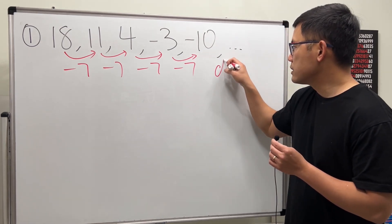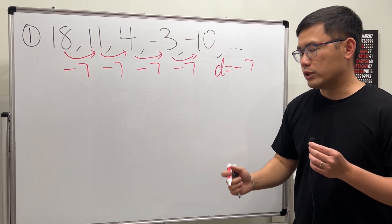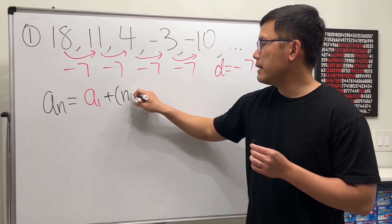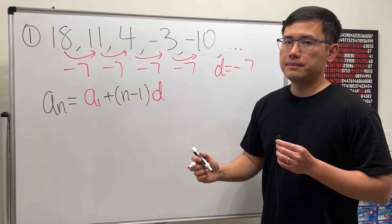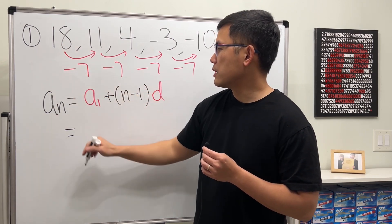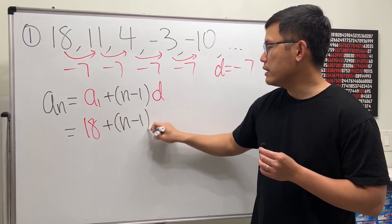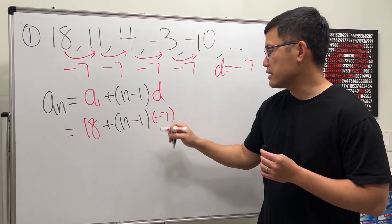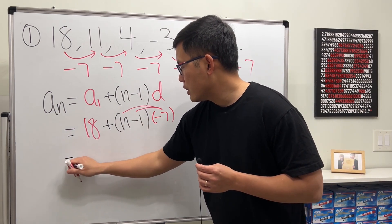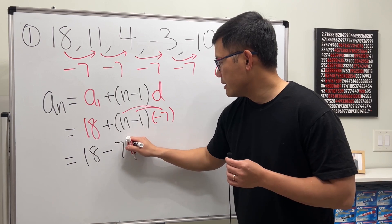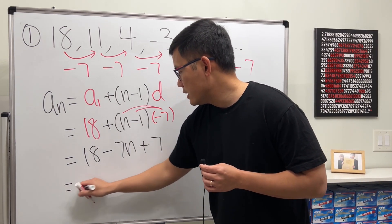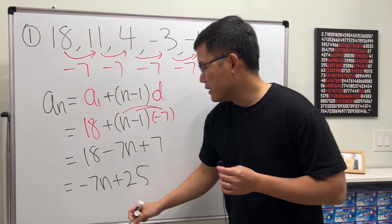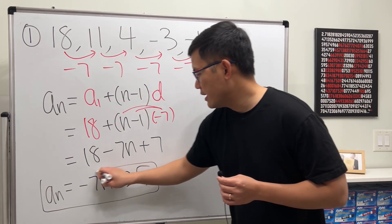The common difference is negative 7. The general form for an arithmetic sequence is a_n equals the first term plus (n minus 1) times the common difference. So a_1 is 18, and we add (n minus 1) times d, which is negative 7. Cleaning this up: 18 minus 7n plus 7, which gives us a_n = -7n + 25.